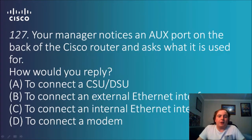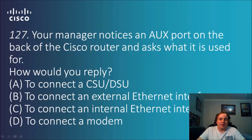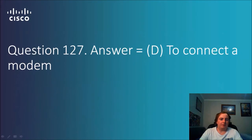Question 127: Your manager notices an aux port on the back of the Cisco router and asks you what it is used for. Options: connect a CSU/DSU, external Ethernet interface, internal Ethernet interface, or connect a modem. The answer is D — to connect a modem. It's mostly just knowing this one, and you can also configure it locally as well.